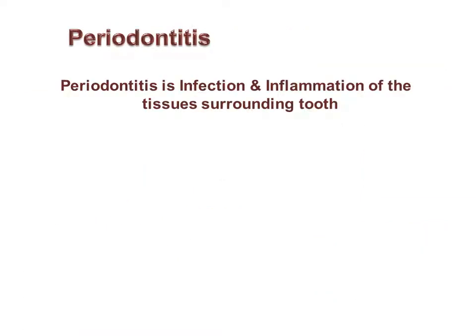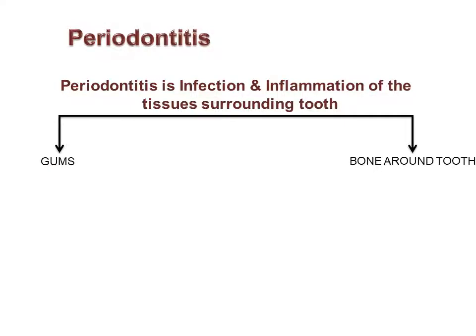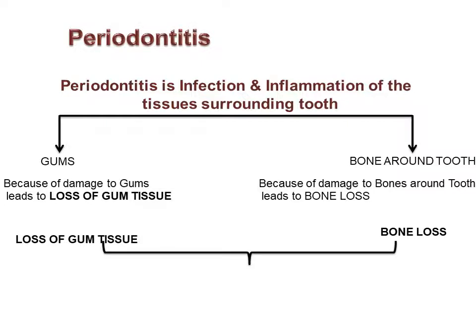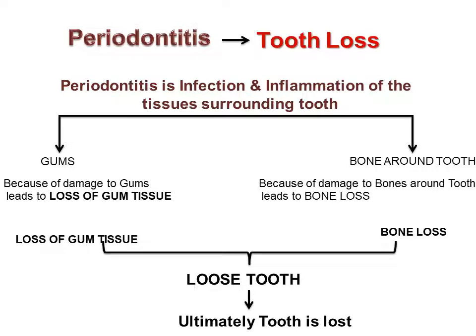Periodontitis is infection and inflammation of the tissues surrounding the tooth — the gums and the bone around the tooth. Damage to the gums leads to loss of gum tissue, and damage to the bones around the tooth leads to bone loss. Both loss of gum tissue and bone loss result in the tooth becoming loose and ultimately being lost. Periodontitis is advanced, more severe gum disease than gingivitis. Since periodontitis involves bone loss, it is irreversible.